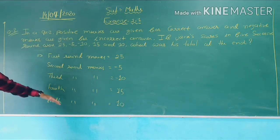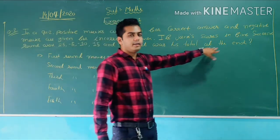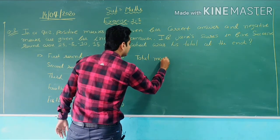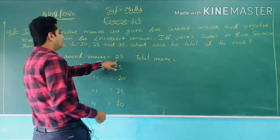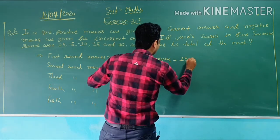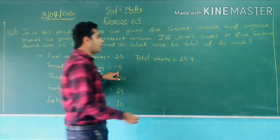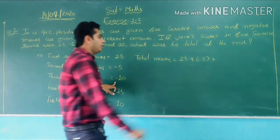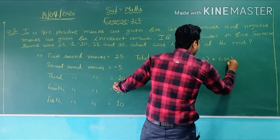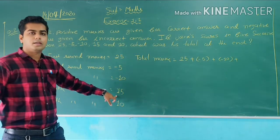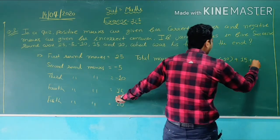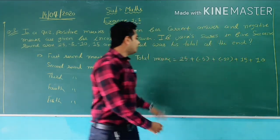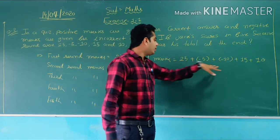Now we have to find out total marks — what was his total at the end? Let us find out total marks. Total marks is equal to: first round is 25 plus the second round he got minus 5, so we write minus 5 in the bracket, minus 5 plus. In the third round he gets minus 10, fourth round 15, and the last round 10. We need to add all of them.